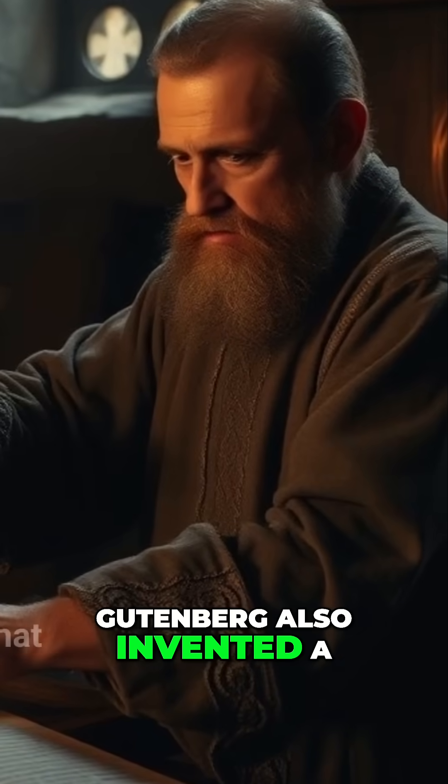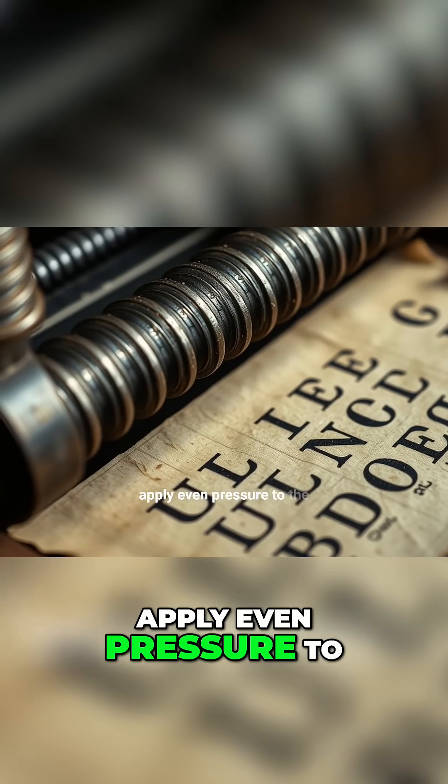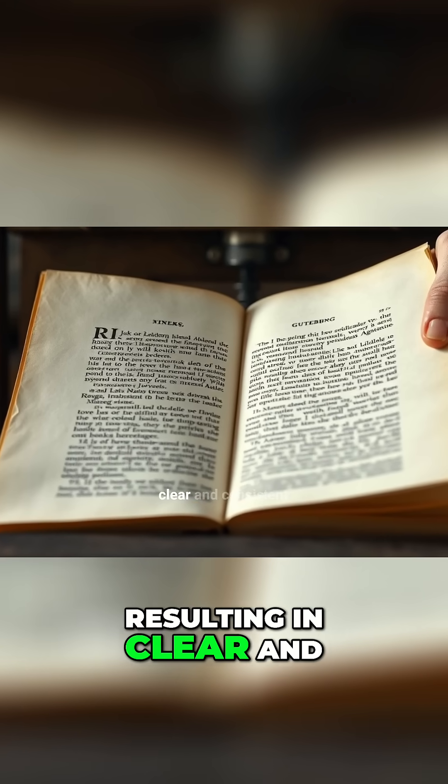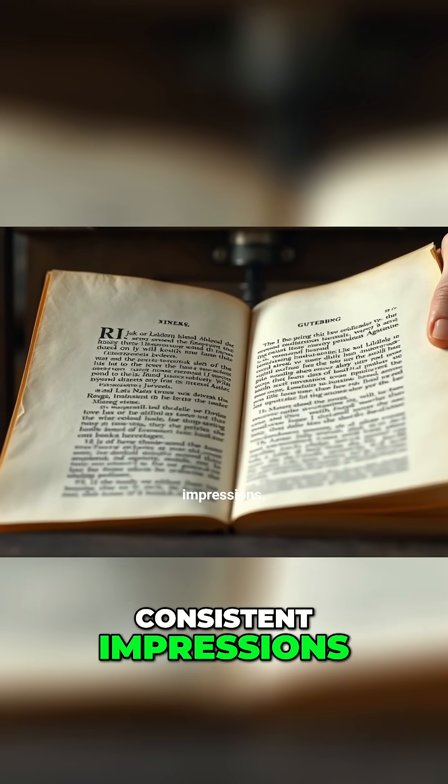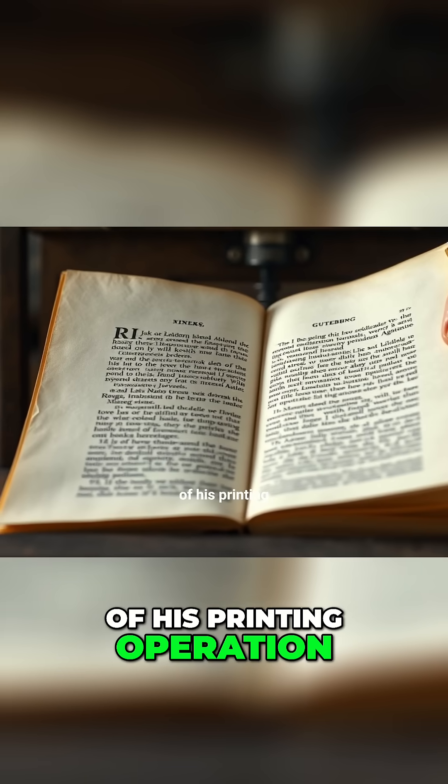Gutenberg also invented a printing press that used a screw mechanism to apply even pressure to the paper, resulting in clear and consistent impressions. This was a crucial element in the success of his printing operation.